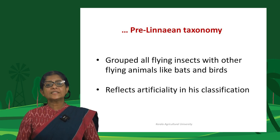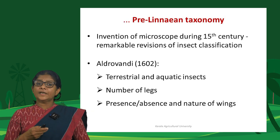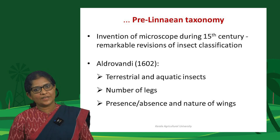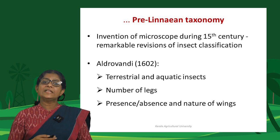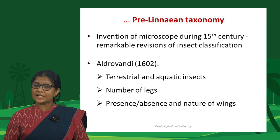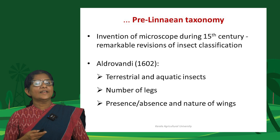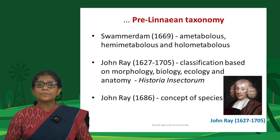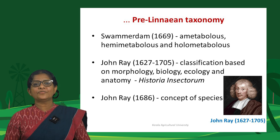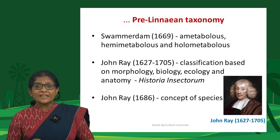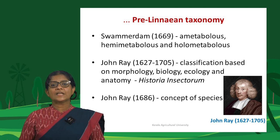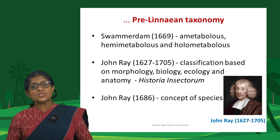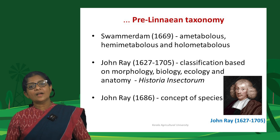For the next few centuries, no serious efforts were made to improve insect classification. Remarkable revision came with the invention of the microscope during the 15th century. In 1602, Aldrovandi classified insects as terrestrial and aquatic, further subdividing them based on number of legs, presence or absence of wings, and nature of wings. Swammerdam developed a revolutionary classification in 1669, classifying insects as ametabolous, hemimetabolous, and holometabolous. John Ray classified insects based on morphology, biology, ecology, and anatomy in his book Historia Insectorum.